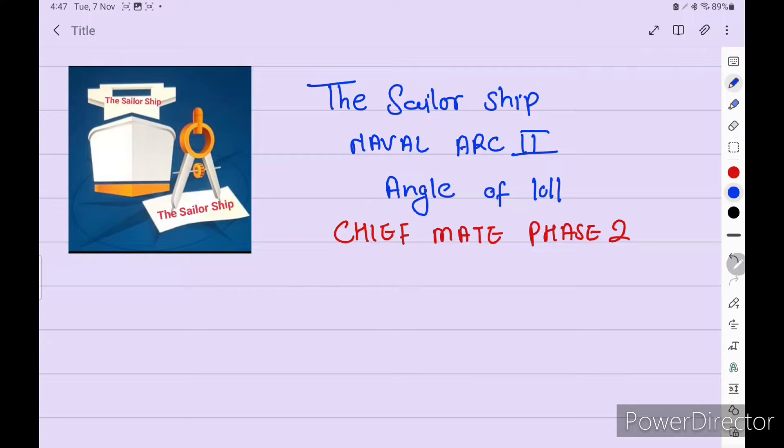Let's discuss Naval Arc 2, angle of loll, cost numericals. This is chief mate phase 2 numericals. Sometimes it comes 25 marks, sometimes it is 15 marks. So this is most frequent question.